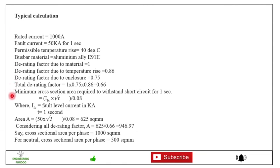In that case, minimum cross section area required to withstand short circuit for one second will be equal to IFC into under root of T divided by 0.08, where IFC is the fault level current in kilo A and T is the one second time. Area A is calculated, here you can see it will be 625 square mm. Considering all derating factor, now if we consider derating factor for temperature rise in enclosure condition, 625 divided by 0.66 will come 946 square mm. So cross section area per phase we need to take 1000 square mm, that is the next higher size, rounded figure, standard size available.